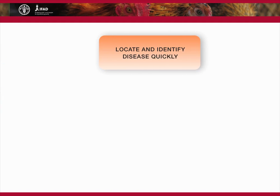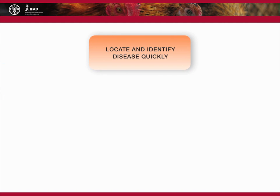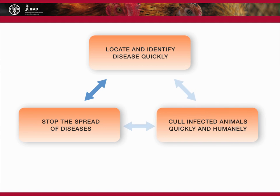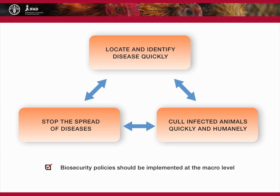When a disease is located and identified, measures need to be taken to stop its spread. For flocks with cases of disease, it is necessary to cull infected animals quickly and humanely. To stop the spread of diseases in the long term, biosecurity policies should be implemented at the macro level.